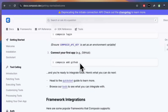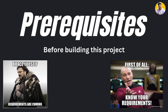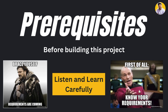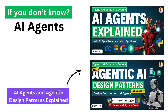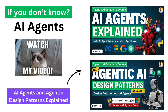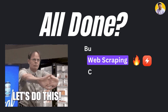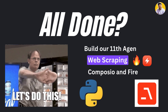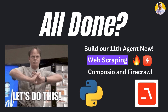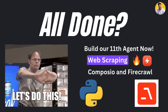Now let's get all the prerequisites of this project — listen and learn carefully. First, you need to have knowledge about AI agents: what they are, how they work, and what the agentic design patterns are. You have to watch the two videos on AI agents and get yourself familiar with AI agent workflows and designs. After all this is done, let's create our 11th AI agent that can scrape anything from the web and create an Excel sheet for that.